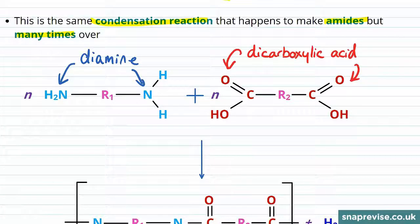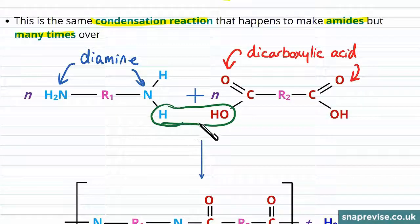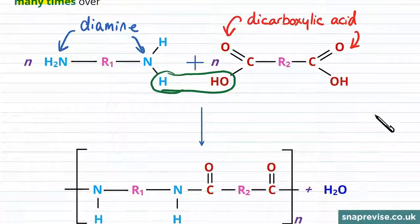Just as before, we remove a hydrogen from one molecule and an OH group. This time though, the OH group clearly comes from the dicarboxylic acid and the one hydrogen from the diamine side, and this will form the polyamide.